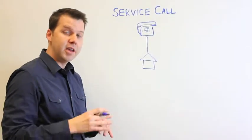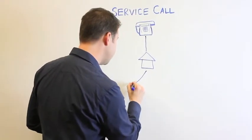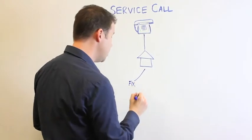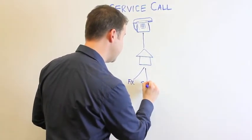And when he gets there, it should go one of three directions. He can either fix the issue with what he has on his service van, or he can fix the issue but will have to go to a supply house to get the right material to do so.